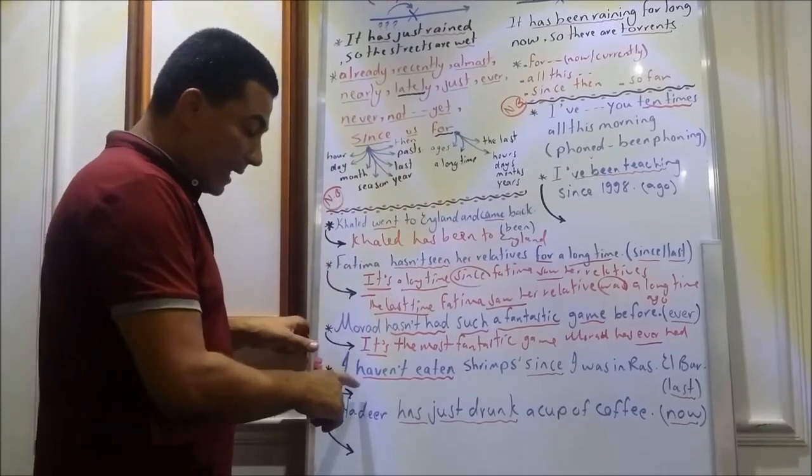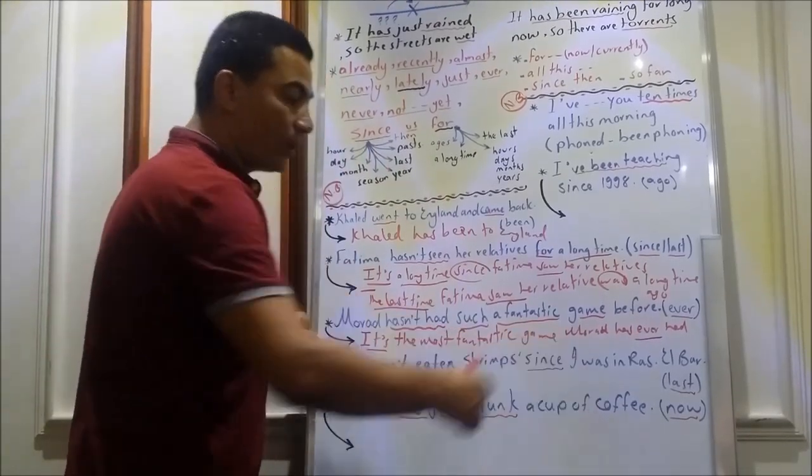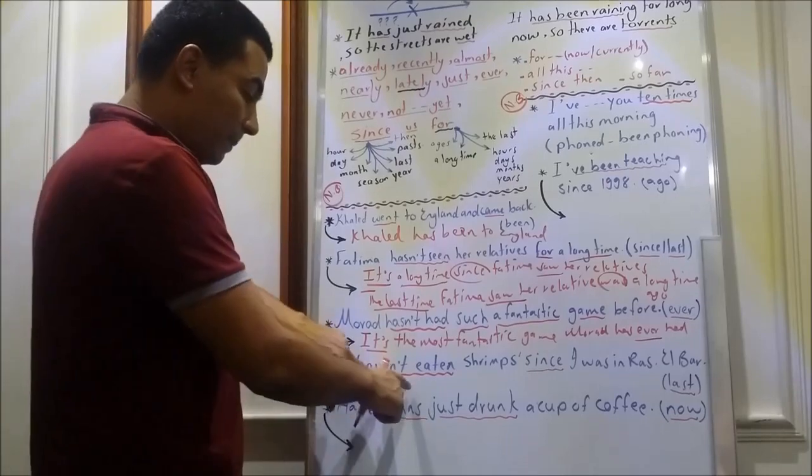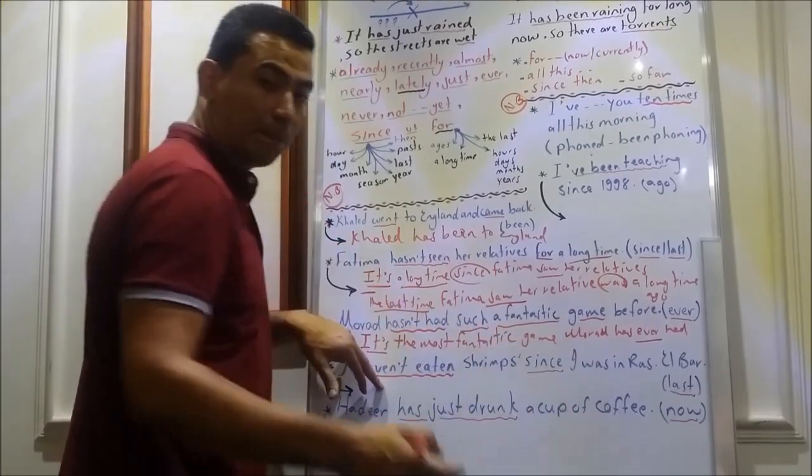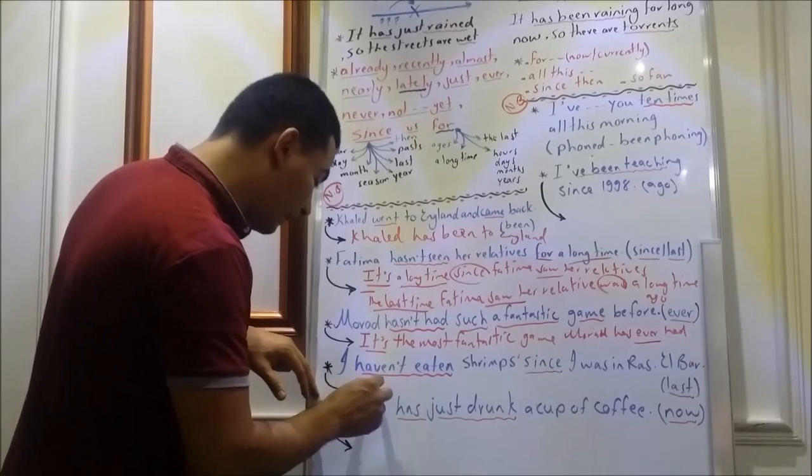The next sentence, I haven't eaten shrimps since I was in Ras el Bar. Present perfect negation, since plus past simple. I can change it into the last time.